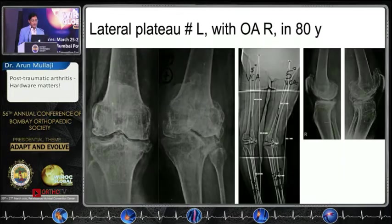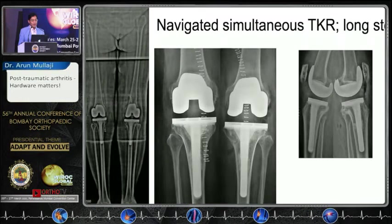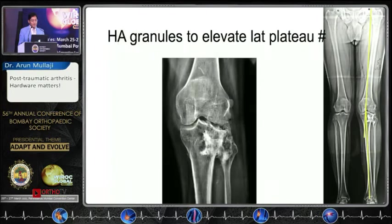This was a patient with a lateral plateau fracture on the left side with OA on the right side, presenting with a severe windswept deformity — an 80-year-old. We performed simultaneous navigated total knees using long stems on both sides. This was an unusual prior surgery done by someone else.